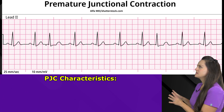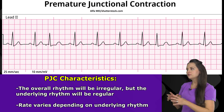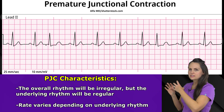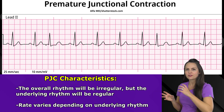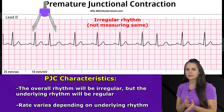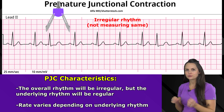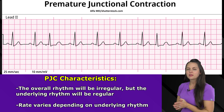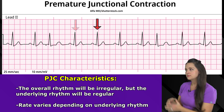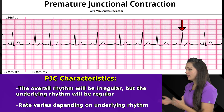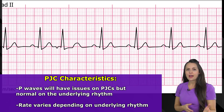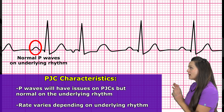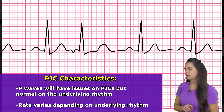Now let's talk about some characteristics of PJCs. When looking at that overall rhythm with those random PJCs thrown in, the overall rhythm is going to be irregular because those PJCs have prematurely occurred. However, the underlying rhythm should be regular. The rates are going to vary depending on the type of underlying rhythm you have. Those P waves are going to have the issues we talked about earlier, but the P waves on the underlying rhythm should be normal.